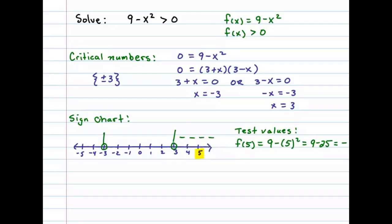Next, let's choose a test value in this middle region. I'm going to choose 0 and test that. f(0) will be 9 minus 0 squared, which is 9, and the result there is positive.